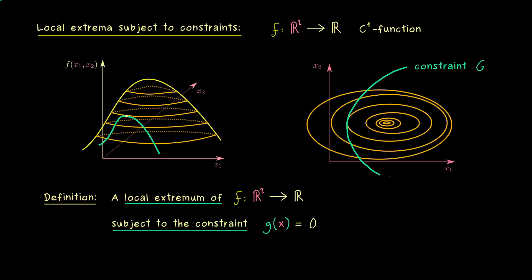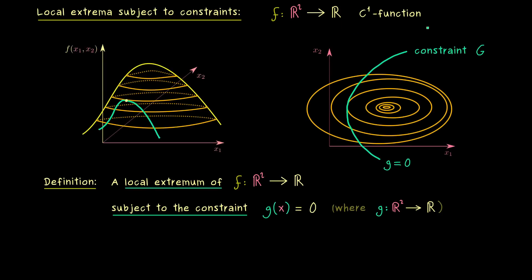So this means the constraint we have in the picture is formulated as a contour line as well. We always have a second function g defined on R² as well, and then we just take a contour line for g. Usually we take the one with value 0, and obviously this is not a restriction at all, because we can always translate the function such that the value is equal to 0. However, usually we want that the constraint function g is a C¹ function as well.